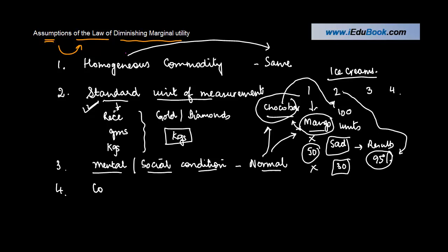And the last one is continuous consumption. There should be a normal gap. The time gap between the first and the second, the second and the third, and the third and the fourth should not be there. Or if it is there, it should not be very large.